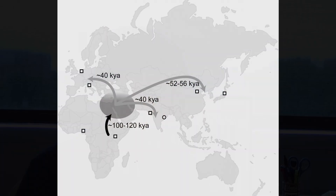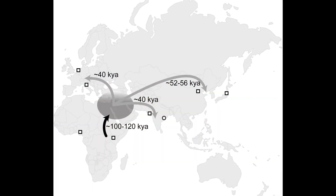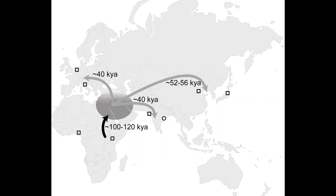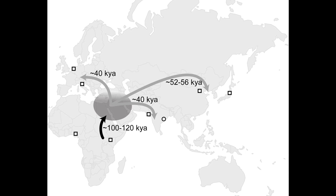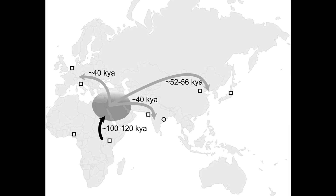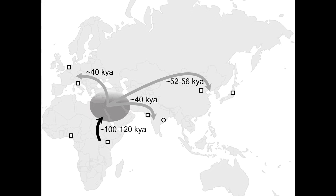In that way, we can get an idea, for example, when people populated Europe, and when people populated East Asia, and how population size has changed over time. That gives us a baseline on how variable our genome is, which has important implications for the risk of disease.